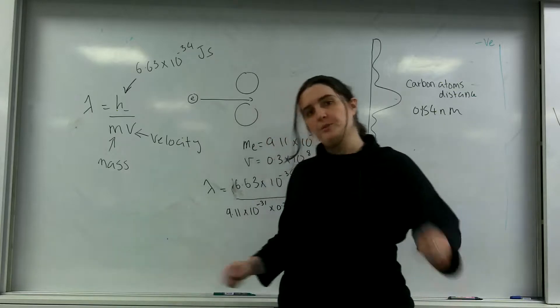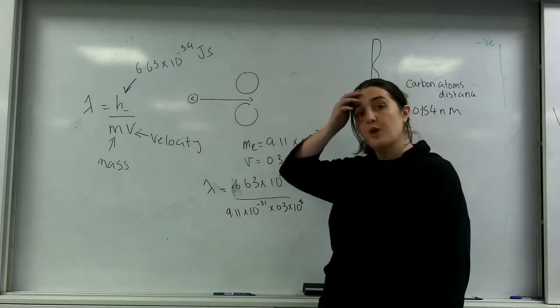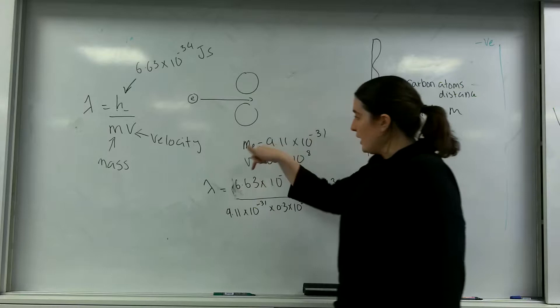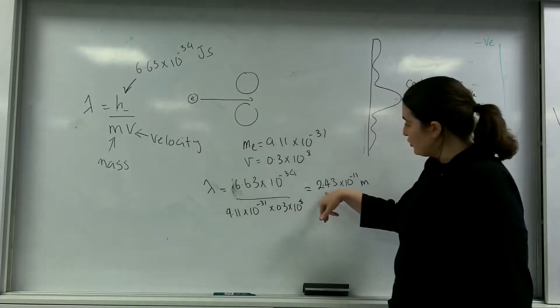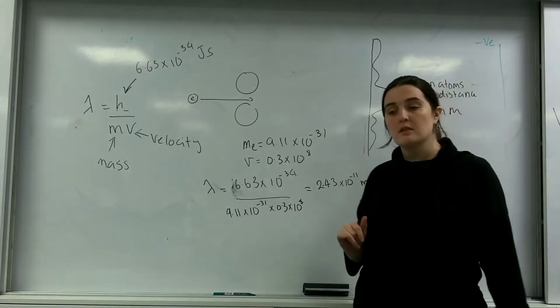This is an electron from the last video, an electron going through some carbon atoms. It has a mass and a velocity of a tenth of the speed of light. We calculated its wavelength which would be 2.43 times 10 to the minus 11.